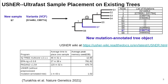UShER uses a mutation annotated tree, in which branches of the phylogenetic tree are annotated with mutations that are inferred to have occurred on them. This significantly reduces the memory and runtime requirement for handling closely related sequences, compared to more general-purpose tools.